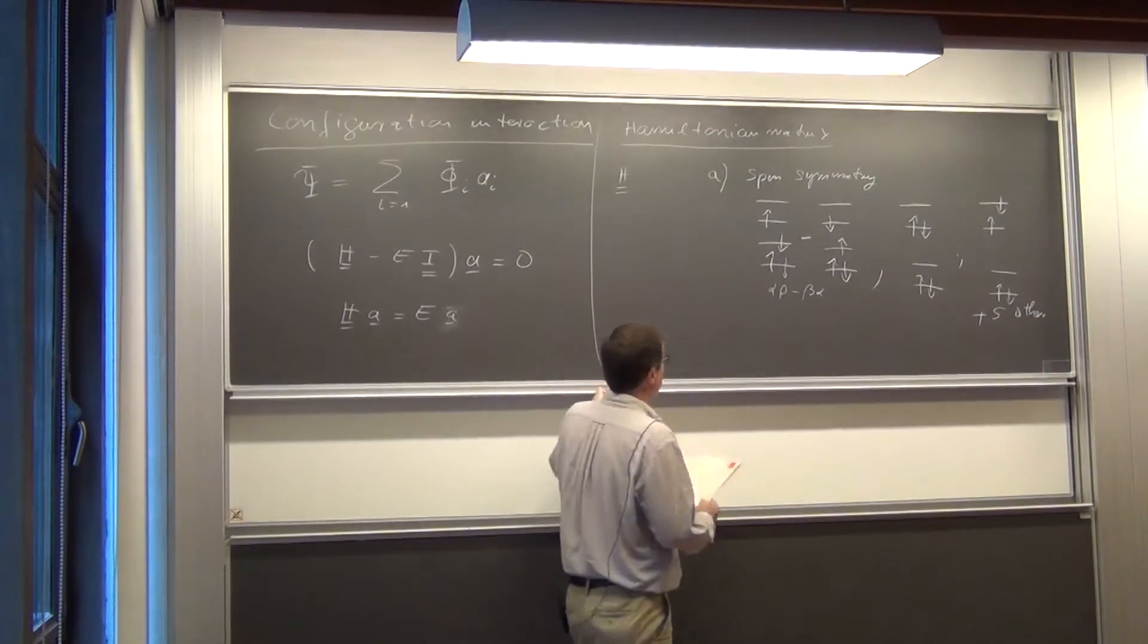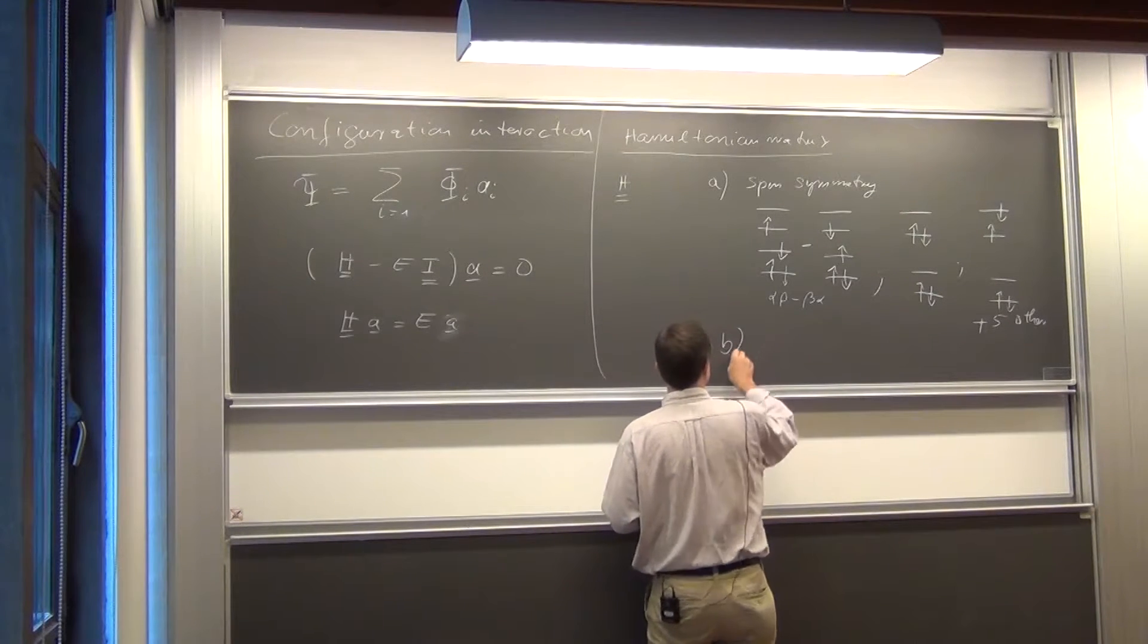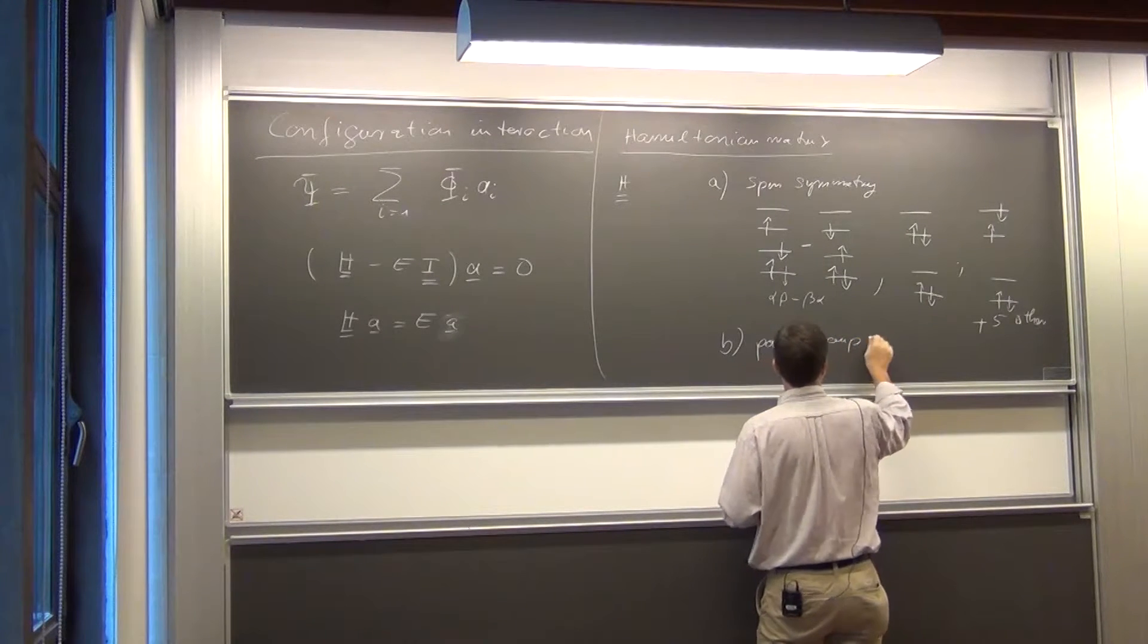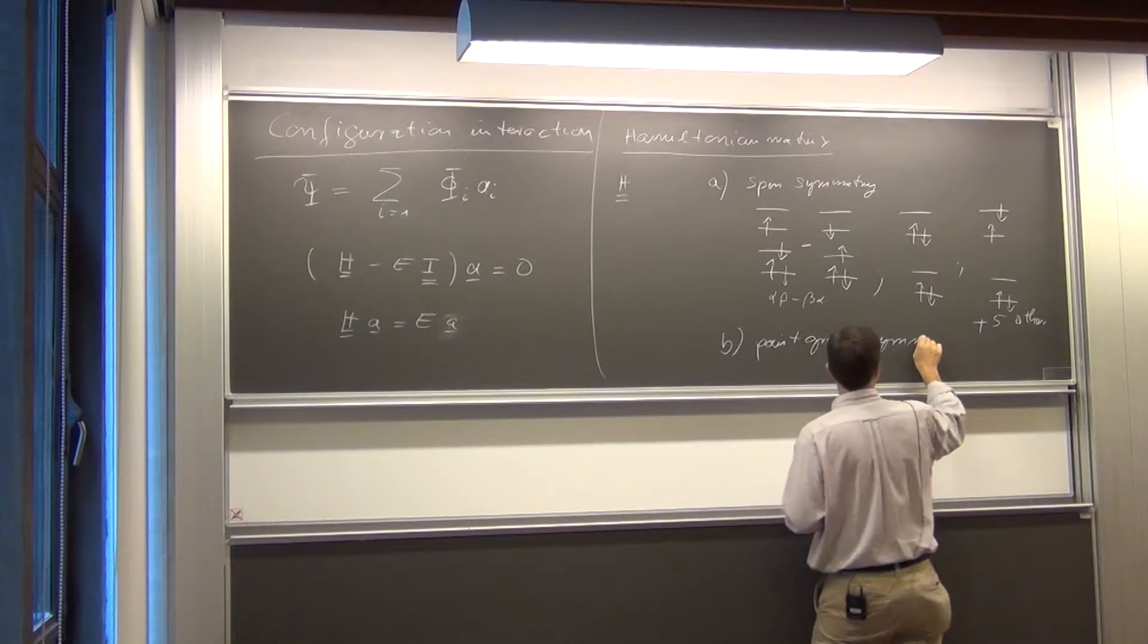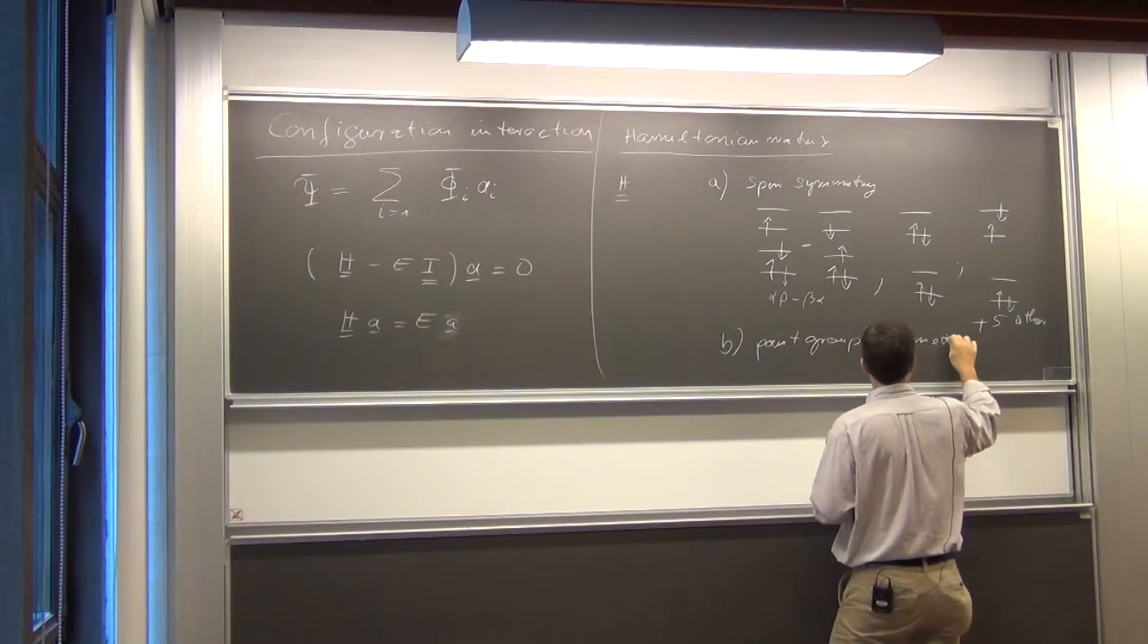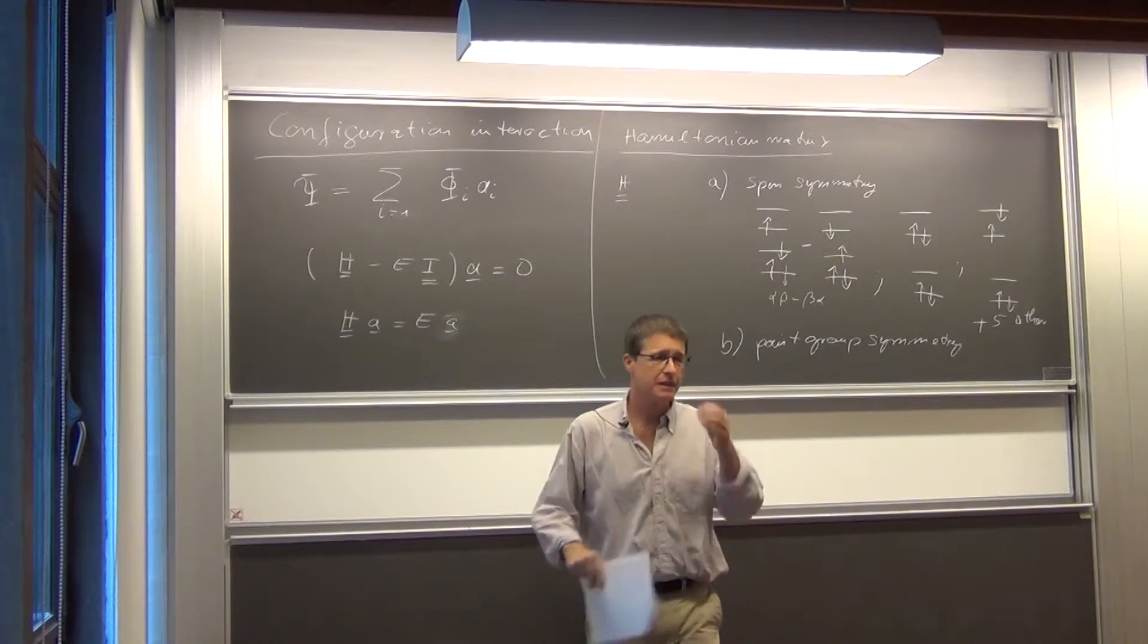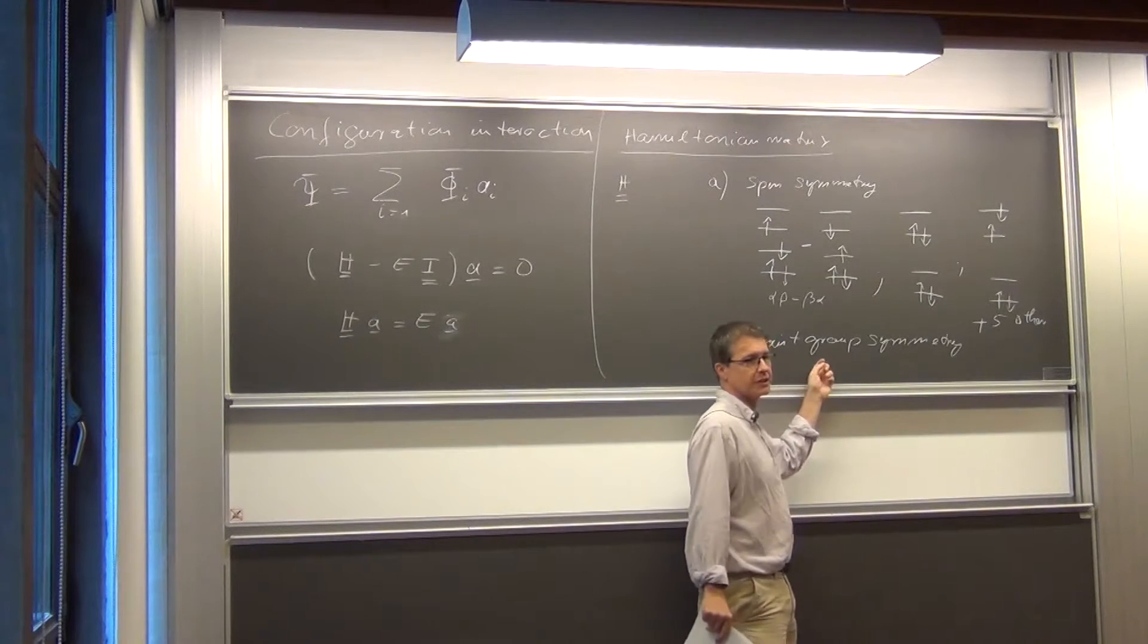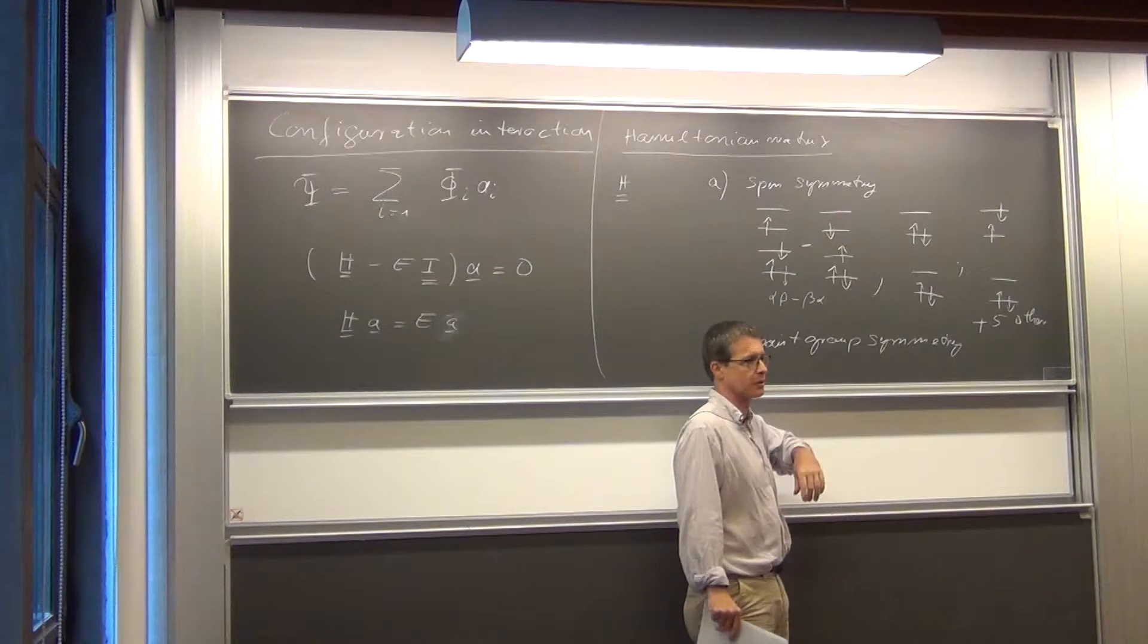Obviously spatial symmetry, point group symmetry, is another obvious way you can reduce the number of matrix elements which you want to calculate.